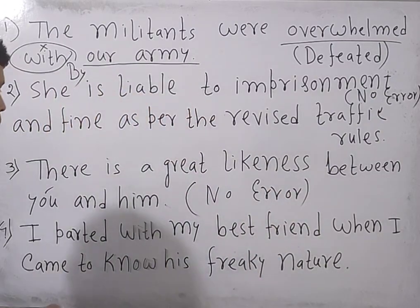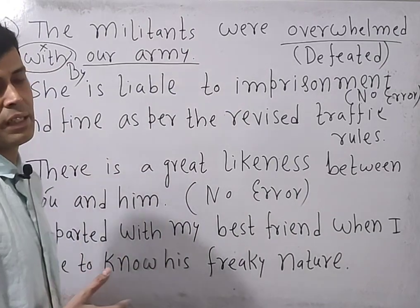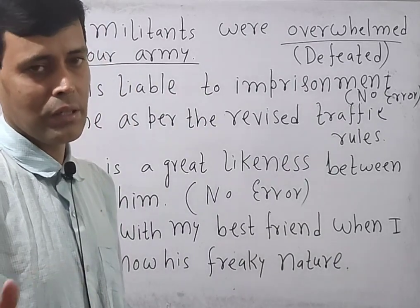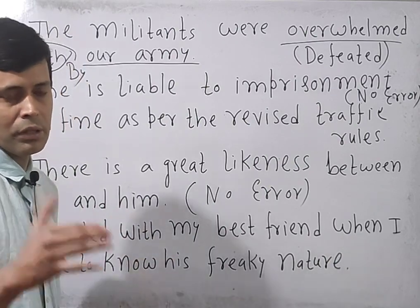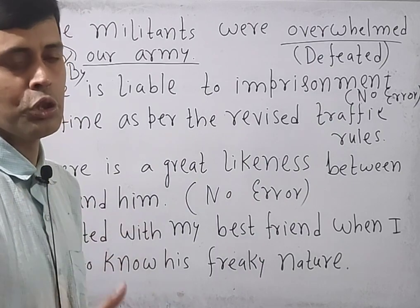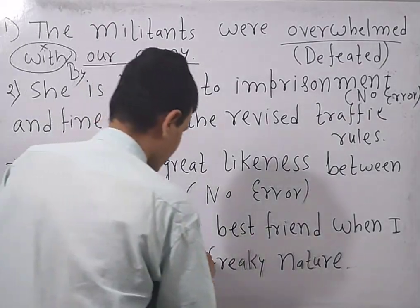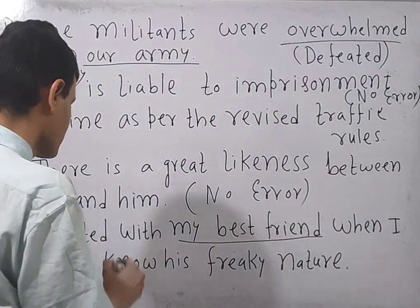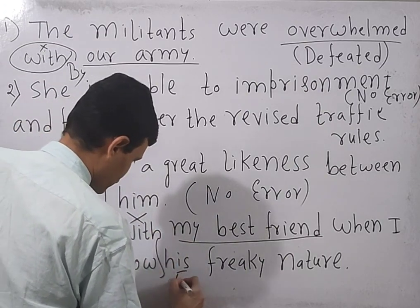Next: 'I parted with my best friend when I came to know his freaky nature' — meaning insane nature. 'Part' means getting away or getting separated. In the case of a person, the preposition should be 'from'; in the case of things, it should be 'with'. Since 'my best friend' is a person, not a thing, instead of 'with' we need to write 'from'.